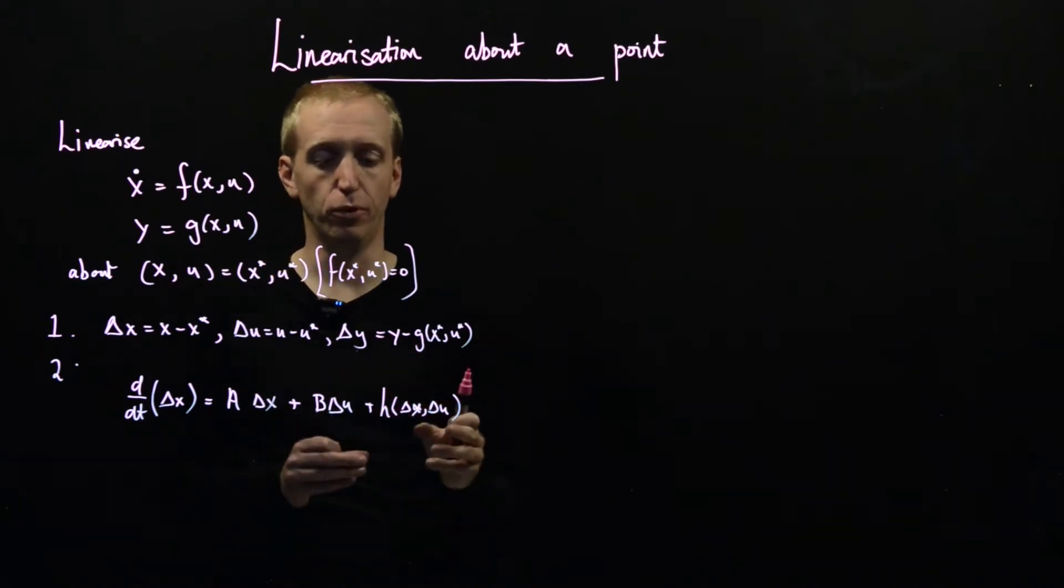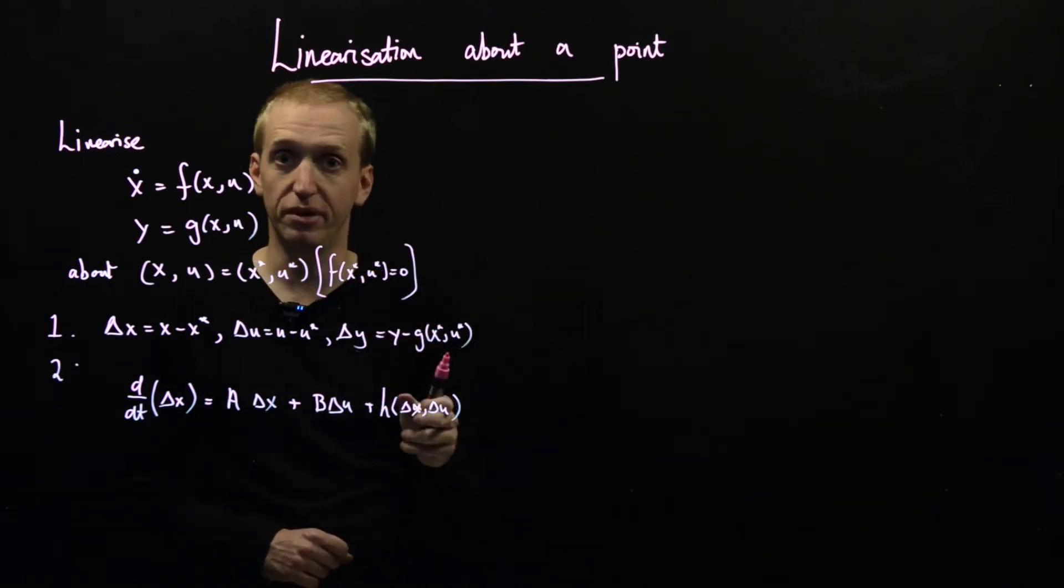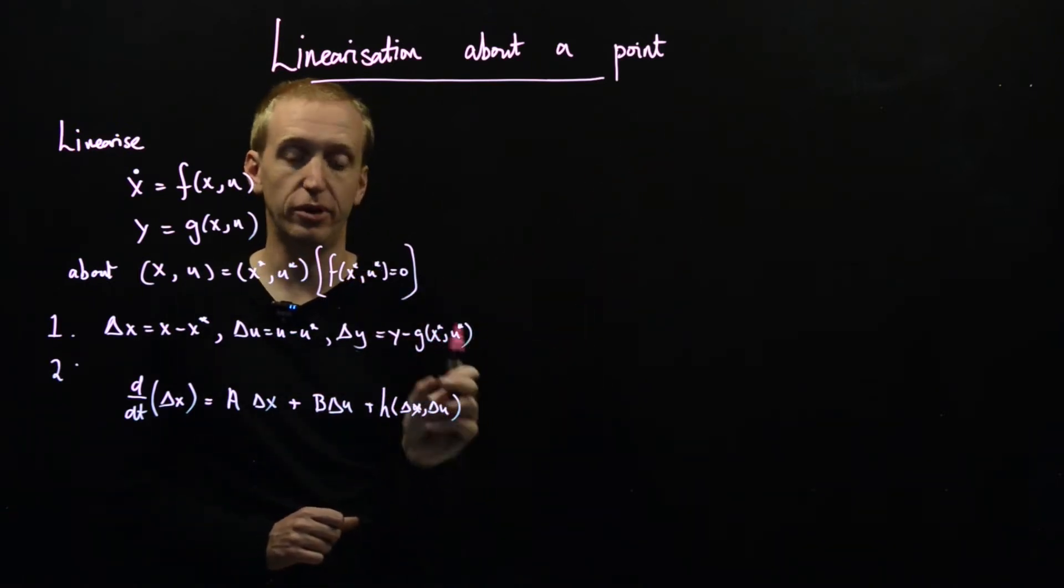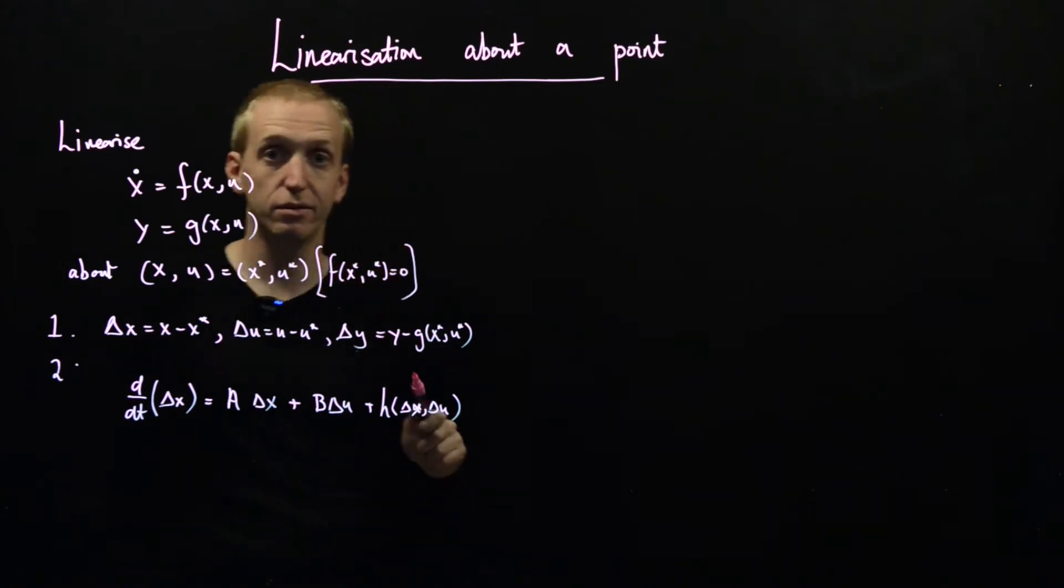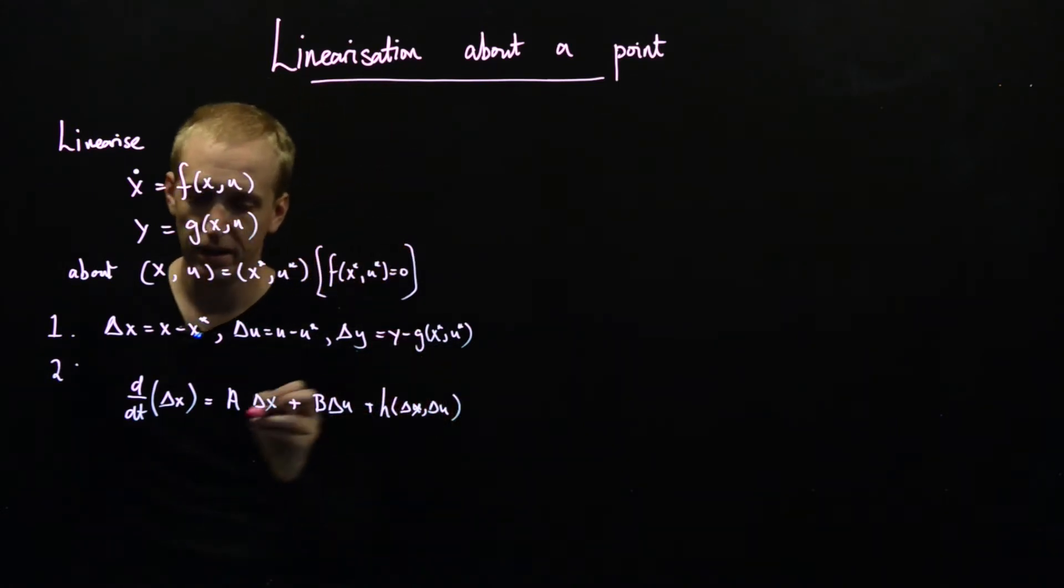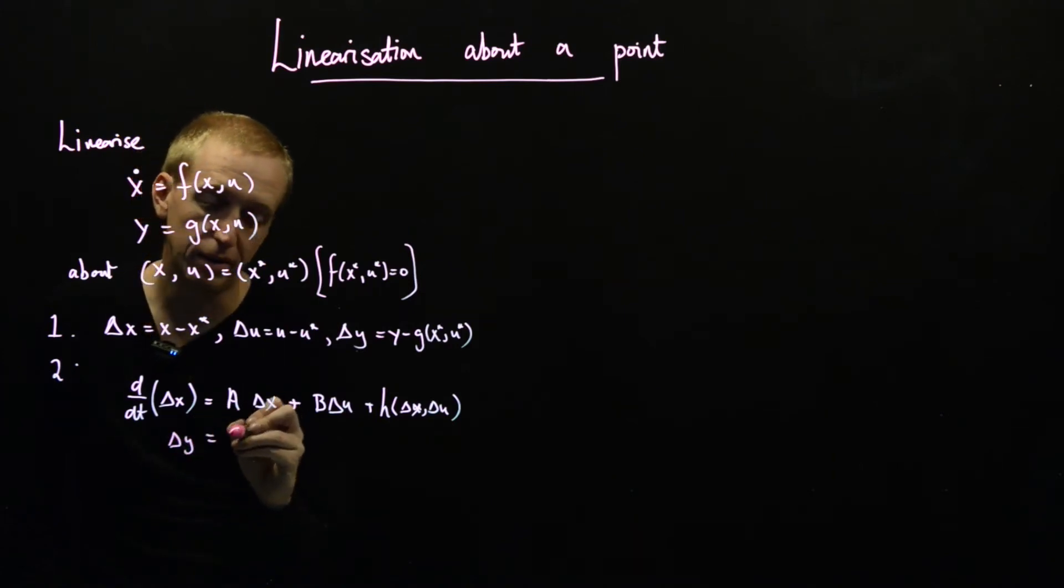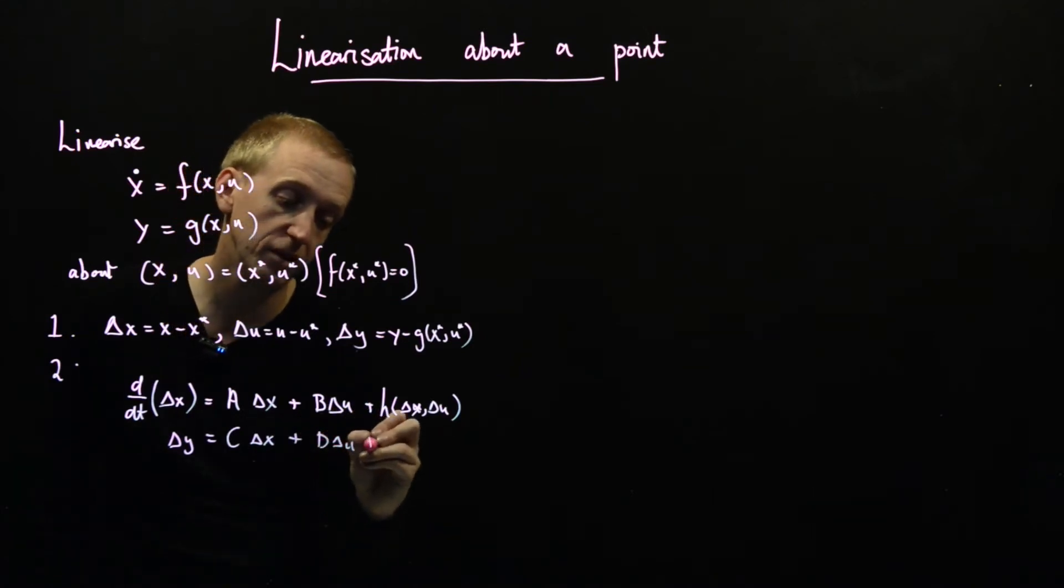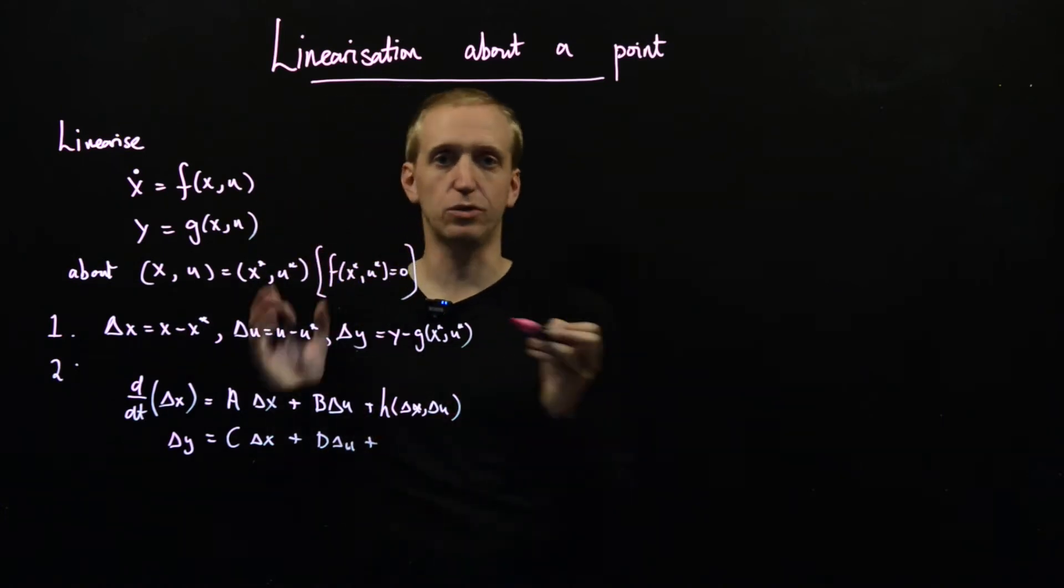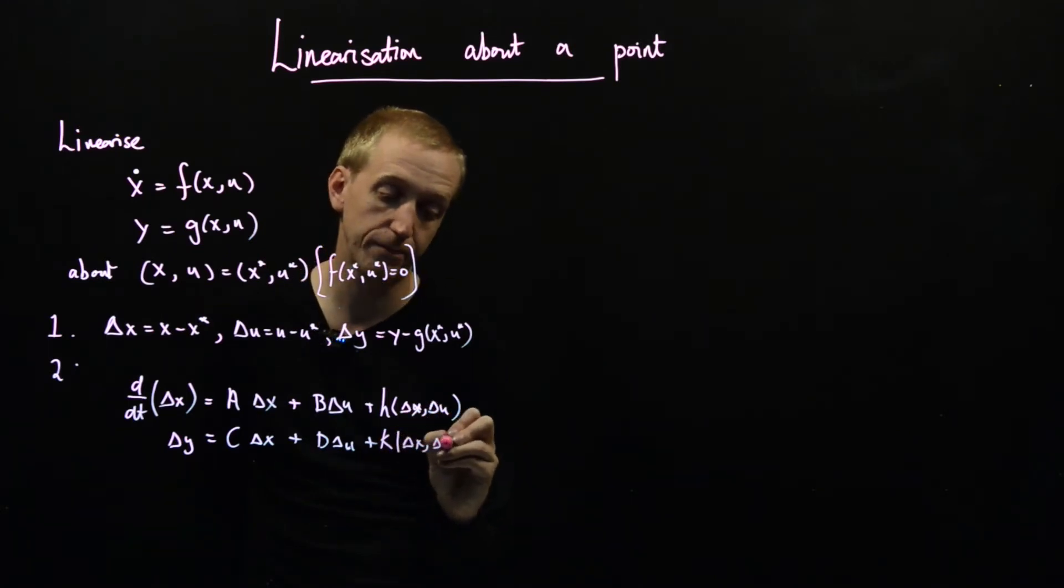And just like before, this is just to ensure that this behaves like squared powers and higher. So everything here is of the order delta x squared and delta u squared. So we'll write down the technical condition at the bottom. It's not really so important for us at the moment. And we do the same with our secondary equation. We write it in terms of our deviation variables and the linear term C delta x, another linear term D delta u, plus another term which collects all of the higher order stuff.